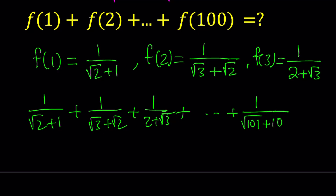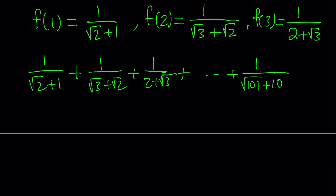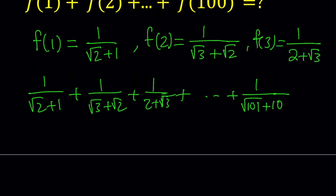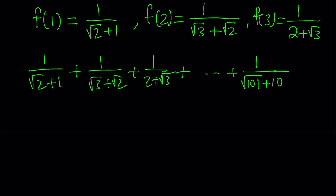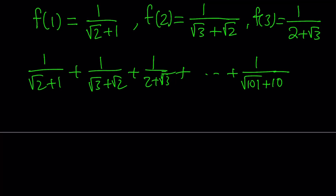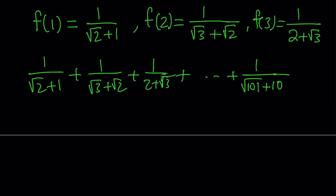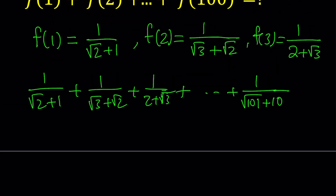We have this gigantic sum with 100 terms. Notice that if you try to make a common denominator, it's going to be a disaster — imagine trying to multiply everything in the numerator by everything besides square root of 2 plus 1. That's going to be a gigantic product. So making a common denominator here is not a good idea.